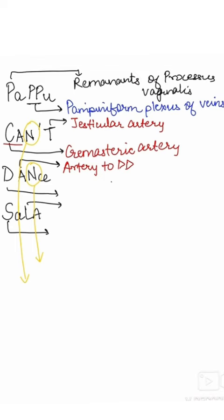From the A, we have artery to ductus deferens. From the D, we have the ductus deferens. From L, we have the lymphatics of the testes.